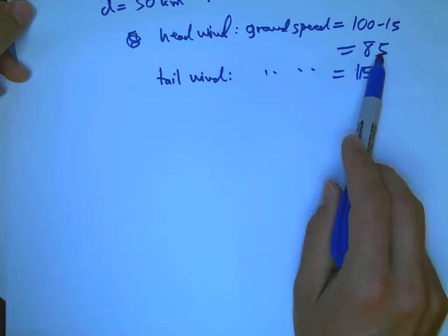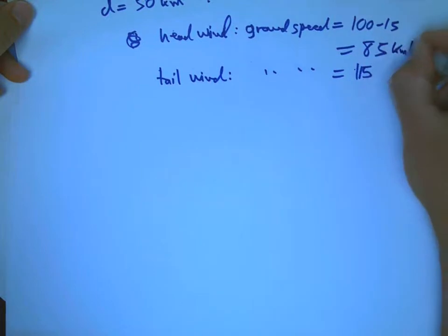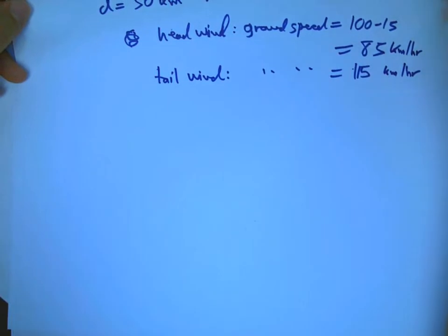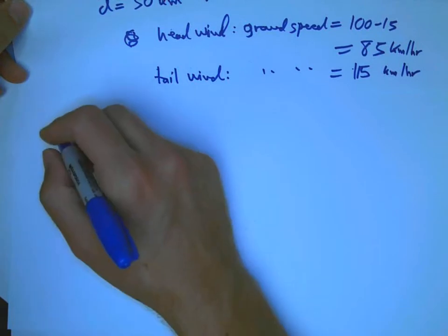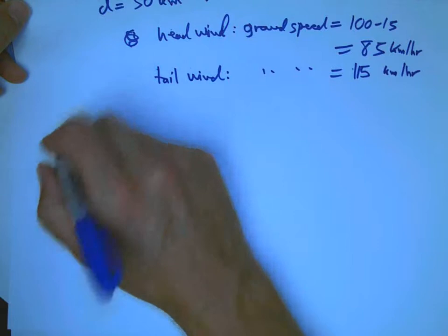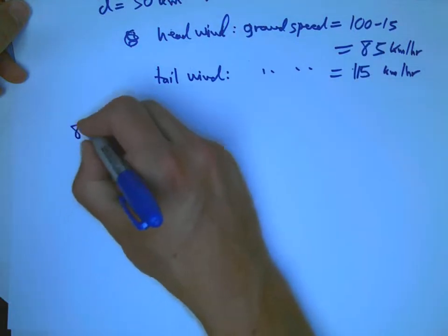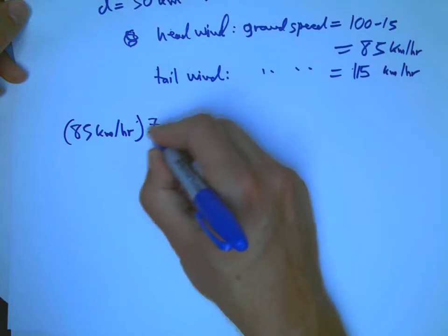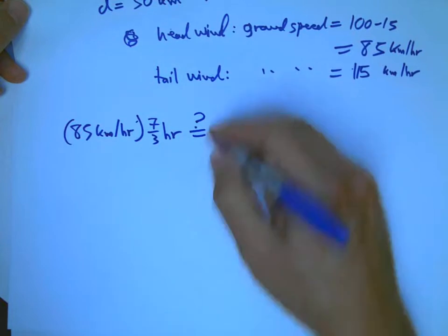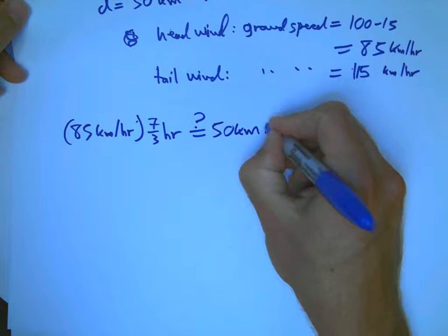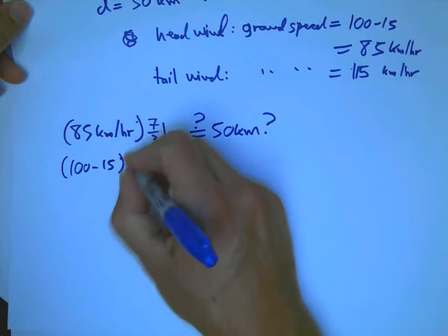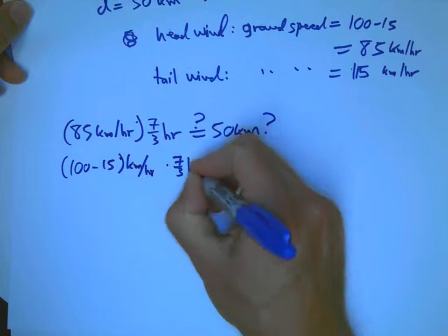We can say, okay, if I was going 50 kilometers, and I was going 85 kilometers per hour. Remember, there's units here. Then, how long would that take me? And we can then see, is that going to be 7 thirds of an hour? Almost certainly not, because otherwise, we've just accidentally guessed the solution to the problem. But it still tells us how to set things up. So, what we do is we take that information, 85 kilometers per hour. That's the rate times the time. Is that equal to 50 kilometers? If you do that, it's not. It's not equal to 50 kilometers.